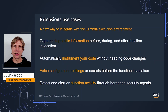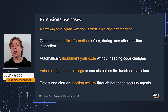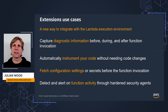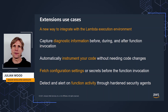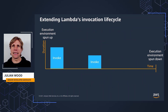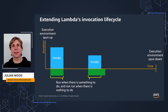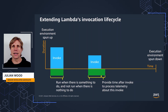There are a number of use cases for extensions. These include observability and logging — capturing diagnostic telemetry data not only during function invocation, but before and after as well. You can use extensions to automatically instrument your code, fetch and cache configuration settings before your functions run, and run hardened security agents to detect and alert on function activity. Extensions extend Lambda's invocation lifecycle to only run when there is something to do, and can also continue running after a function invocation has finished to send telemetry data.